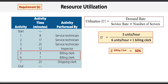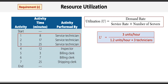Requirement C asks for the utilization of the service technicians. We use the same formula. The demand is stated as 3 units per hour and the service rate is 1.2 units per hour as calculated in Requirement A. We multiply that by the 3 technicians. 3 divided by 3.6 equals 83% utilization.